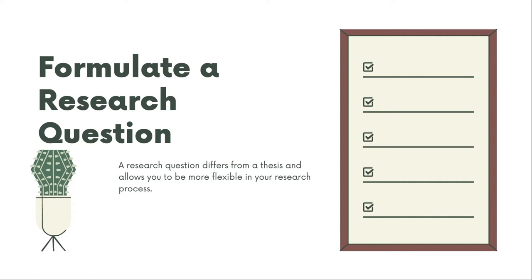A good way to begin is by consulting reference materials on topics related to your research question. This will help you to build a bibliography. The most recent reference materials — encyclopedias, dictionaries, things of that nature — will also give you a good sense of where the scholarly field stands on a particular topic. They'll help you have a home base to come back to if you feel like you're getting lost in the weeds of your research. Reference materials will also be very helpful in building an initial bibliography as you refine your research.